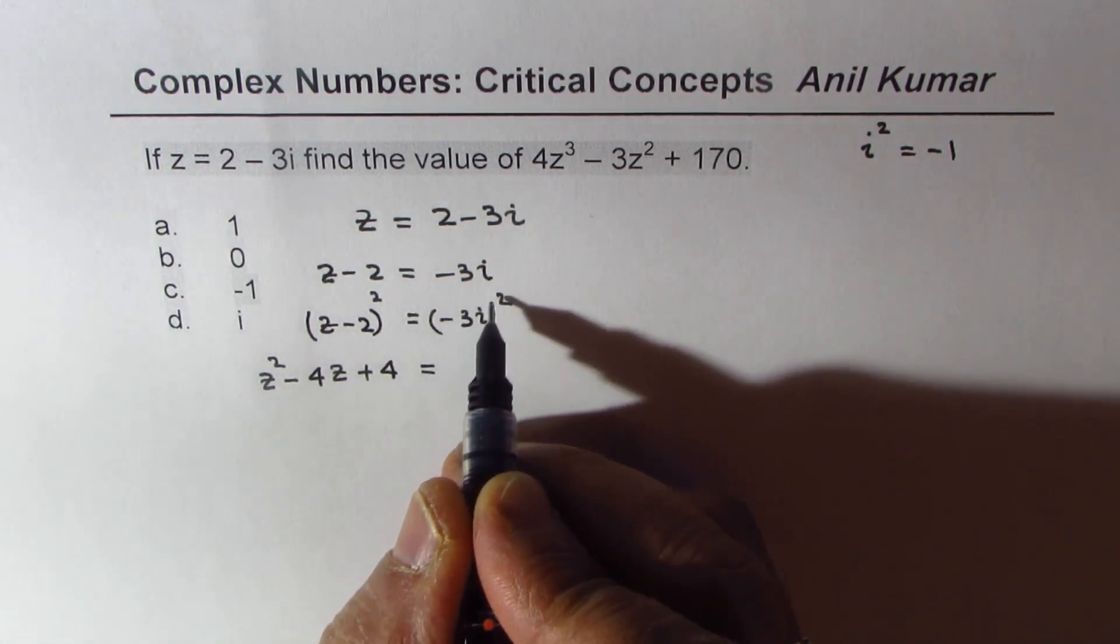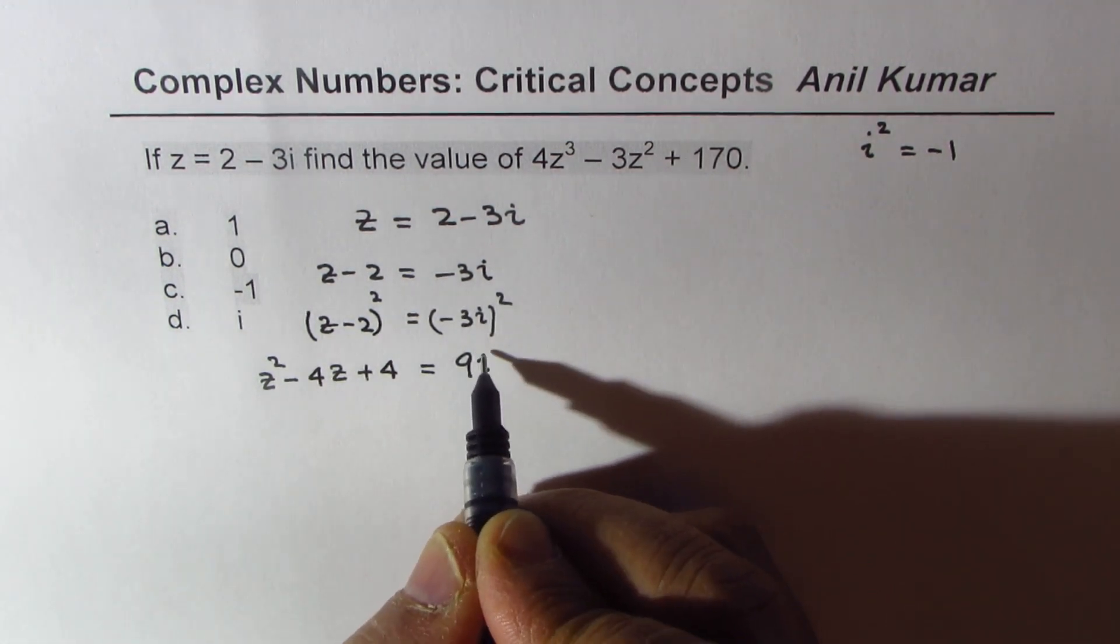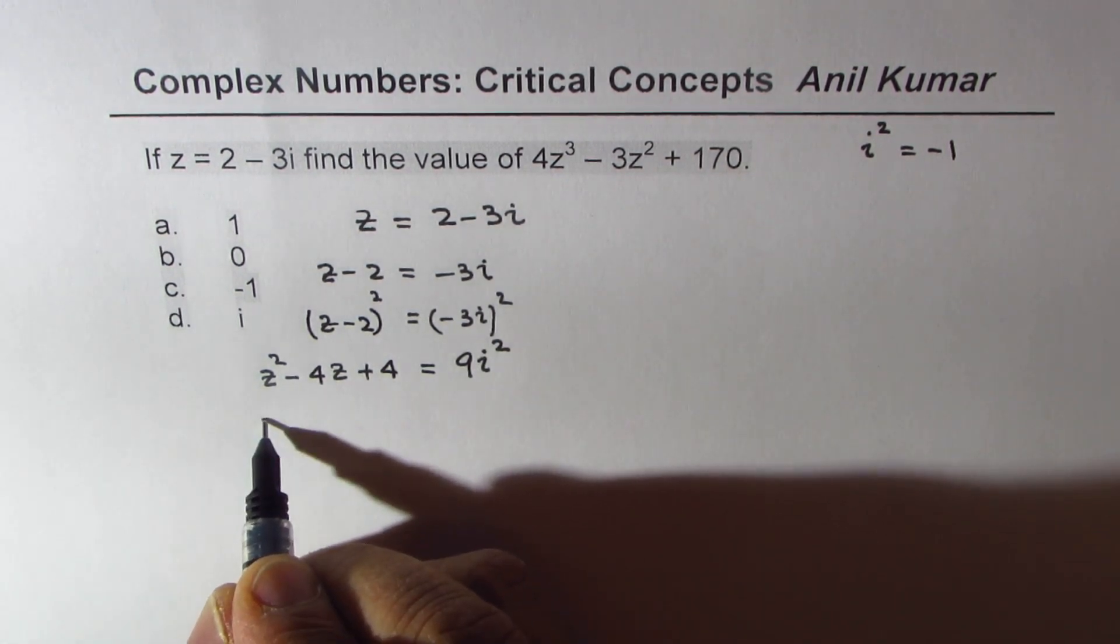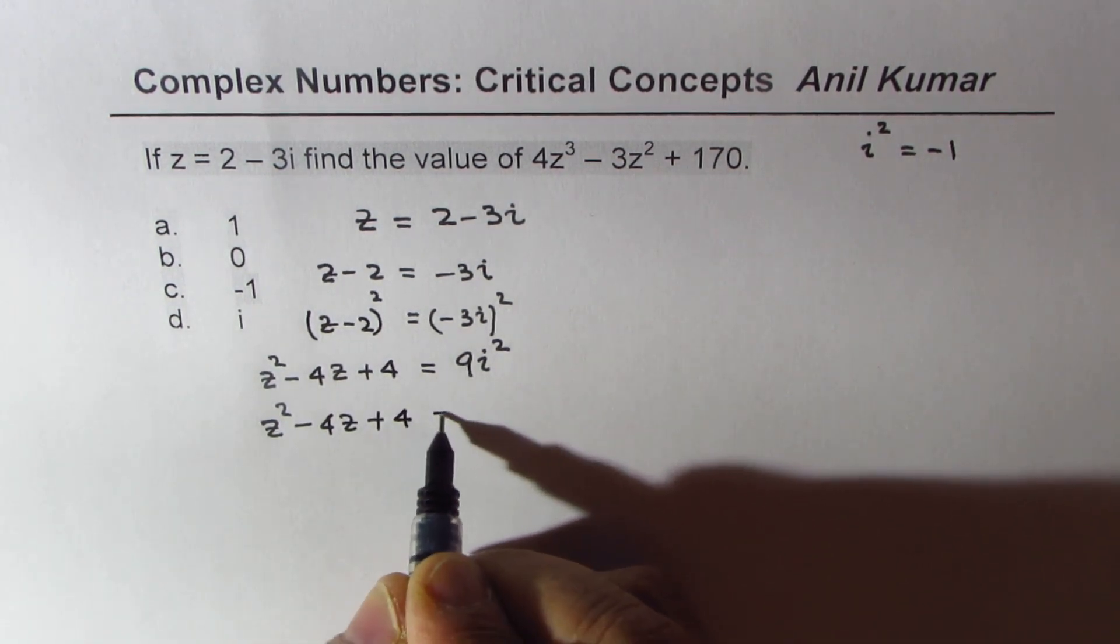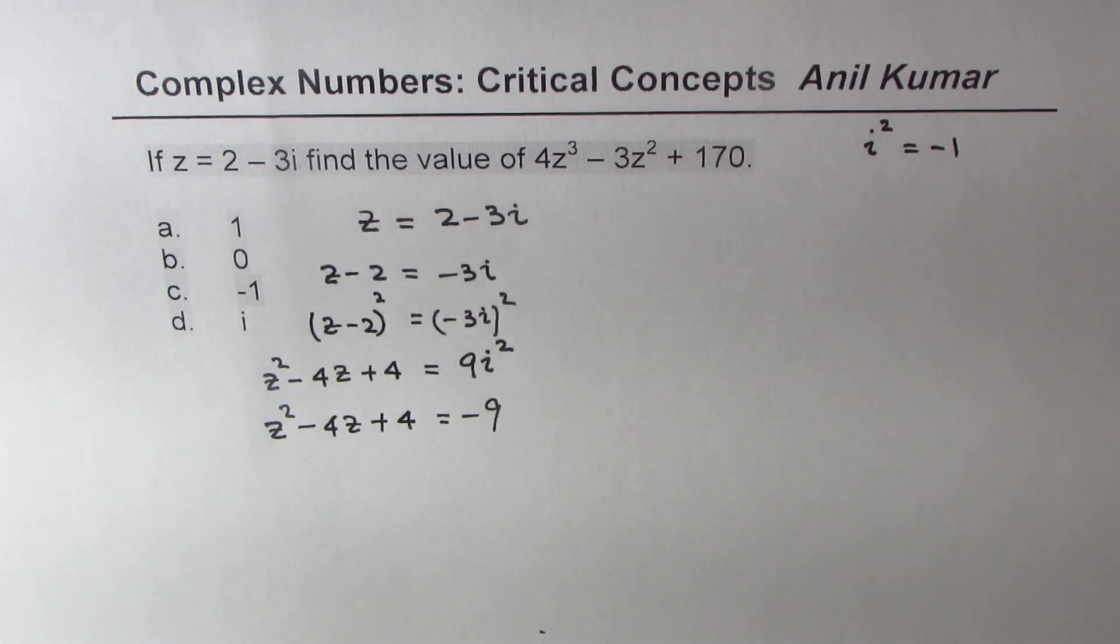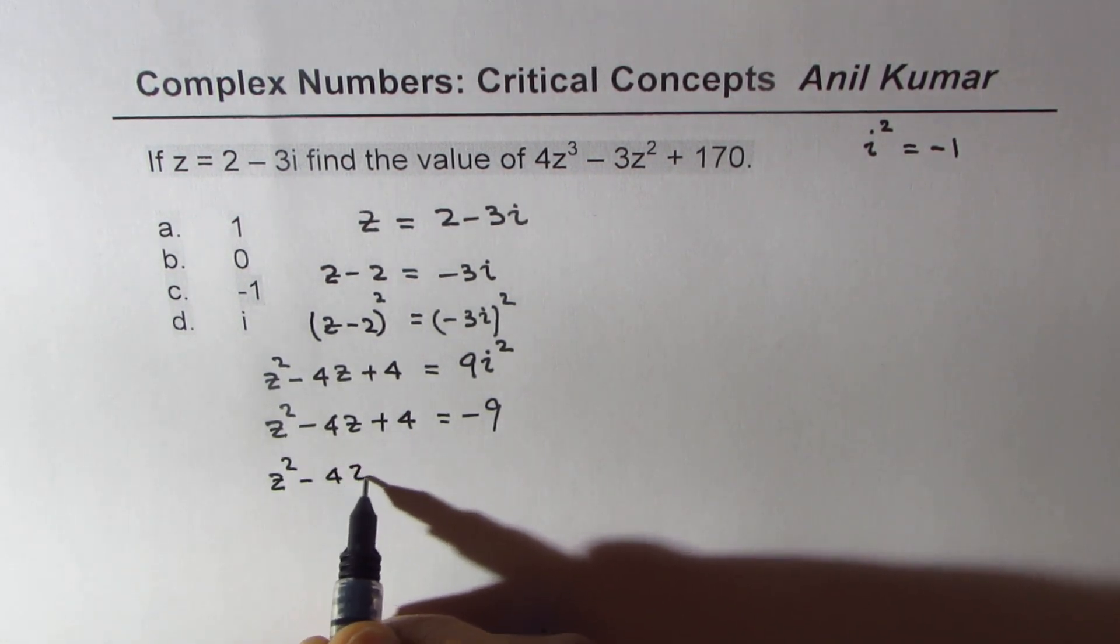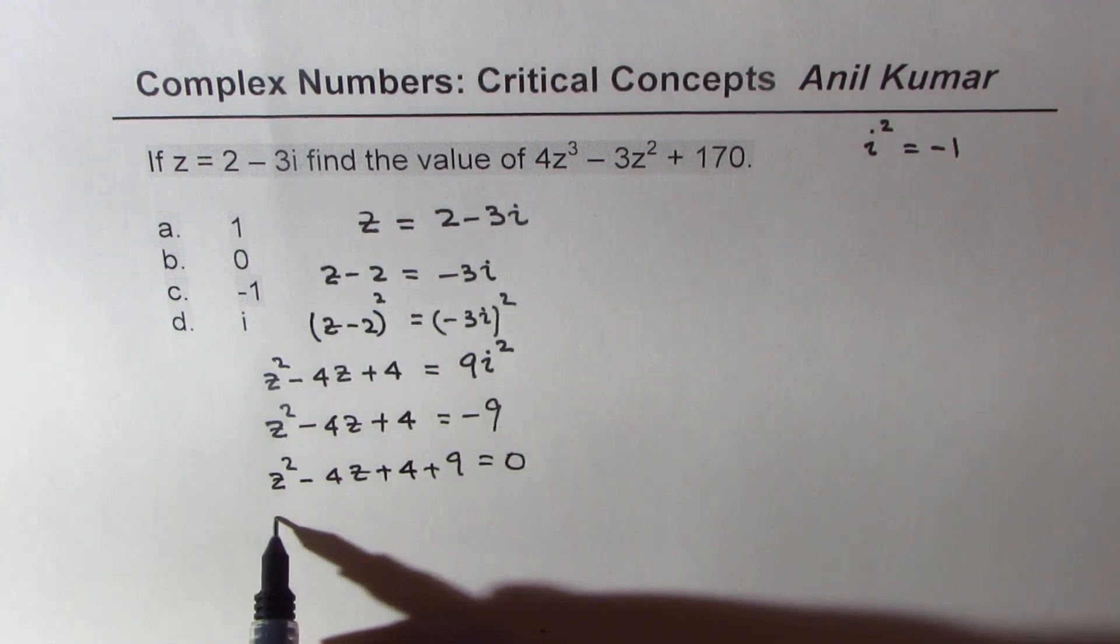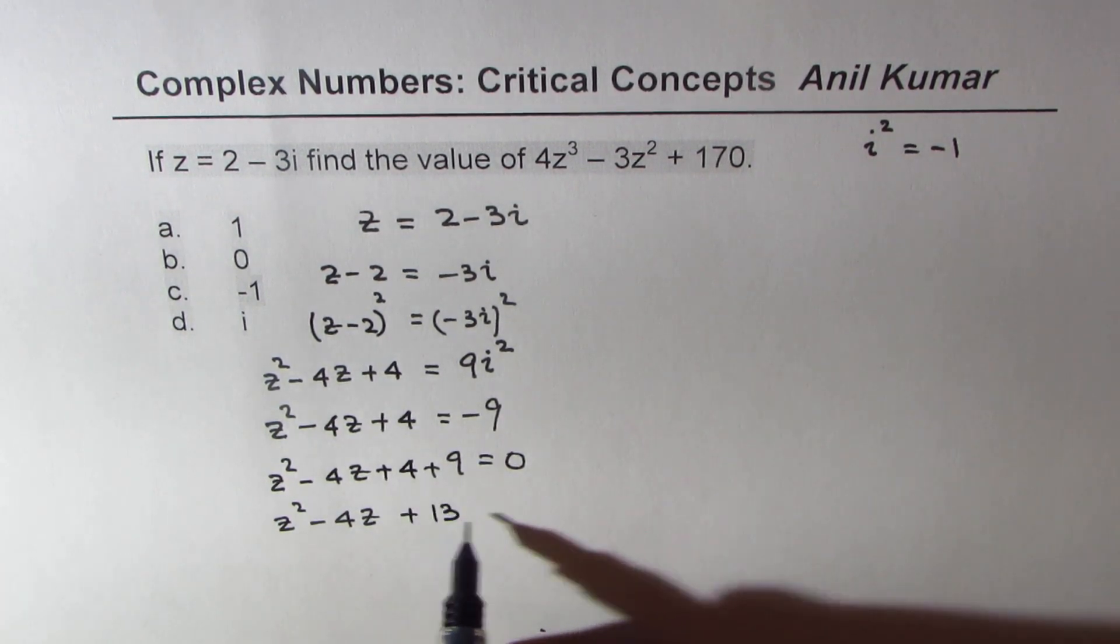You get z² - 4z + 4 equals... now square of this minus becomes positive. 3 squared is 9, but i² is negative 1. Let me write this as 9i². Then we'll make it negative. So what we get here is z² - 4z + 4 equals -9. Bringing them together gives you z² - 4z + 4 + 9 = 0, and that is 13. So we get z² - 4z + 13 = 0.